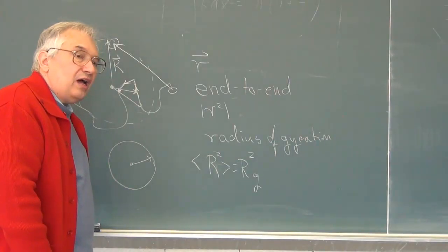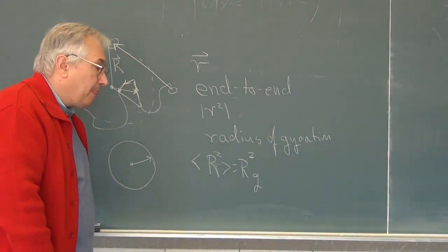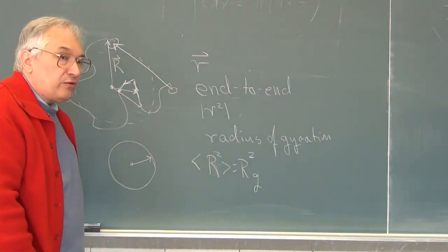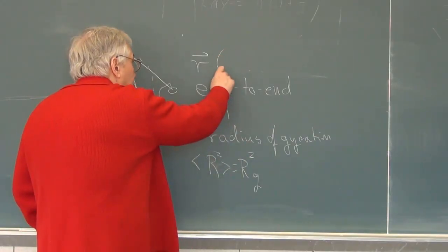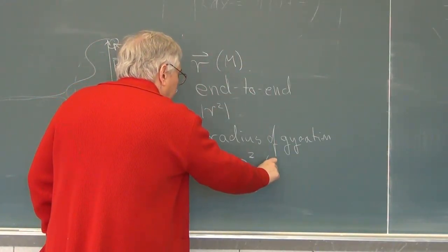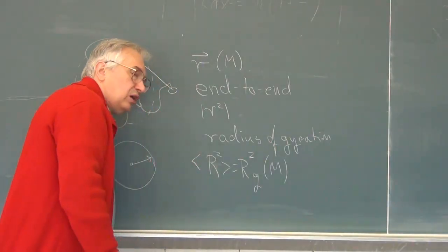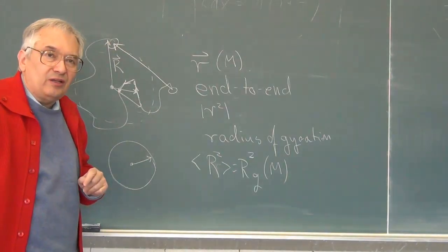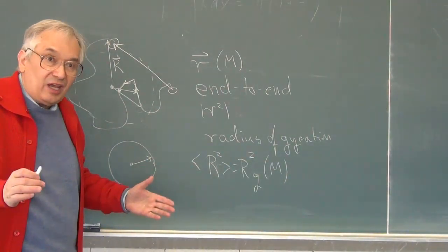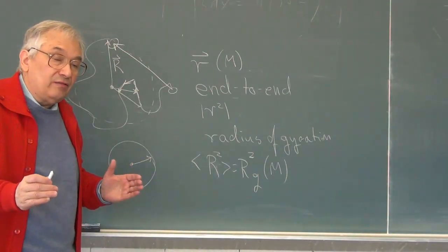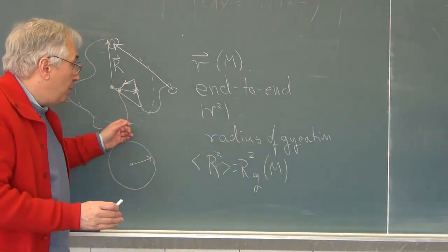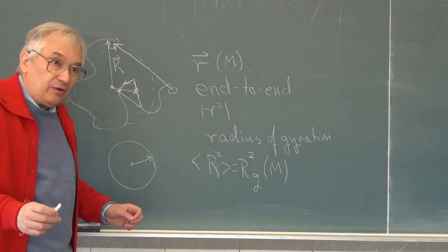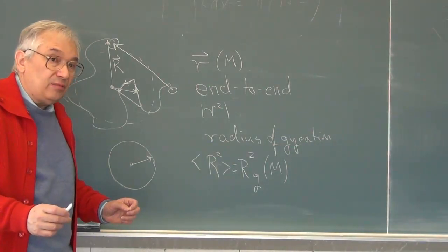Now, the chain sizes have two features. One is that both the end-to-end vector and the radius of gyration depend on the polymer molecular weight. The more monomers, the longer the random coil is, and the bigger the chain is going to be. There is an entire field involved in studying how big the chain is relative to its molecular weight. We get to that a bit later in the chapter.